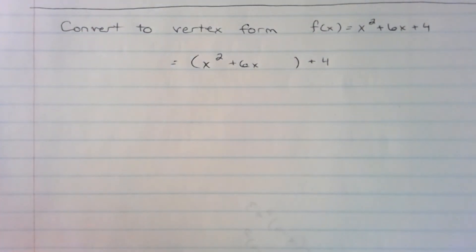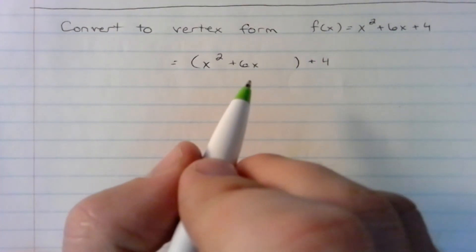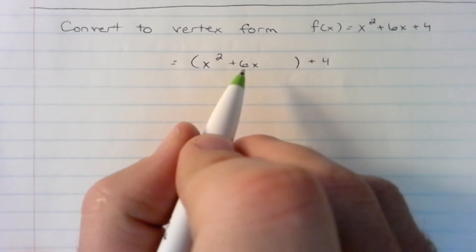Next, what we do is take half of 6, which is 3, and then square it. That would give us a 9.